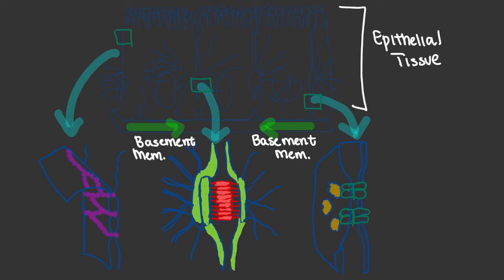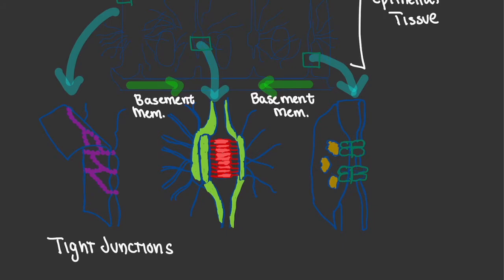The basement membrane is what gives our epithelial tissue its support. In addition to our basement membrane, we have a few things that help to regulate what happens as it relates to things coming into and out of the body. These tight junctions make it impossible for molecules and substances to pass through the epithelial tissue.